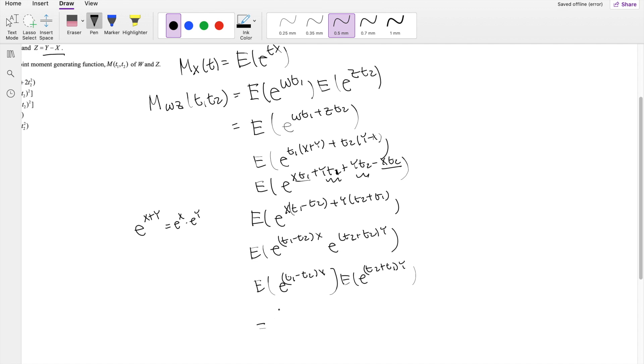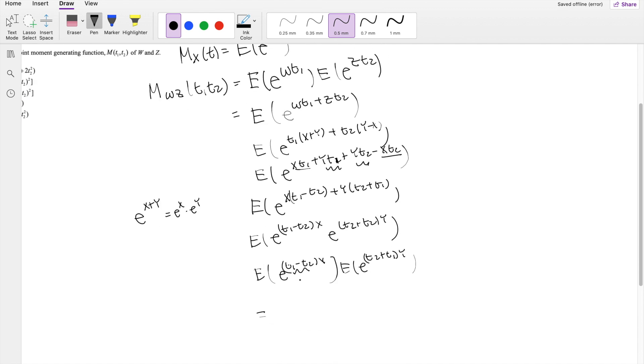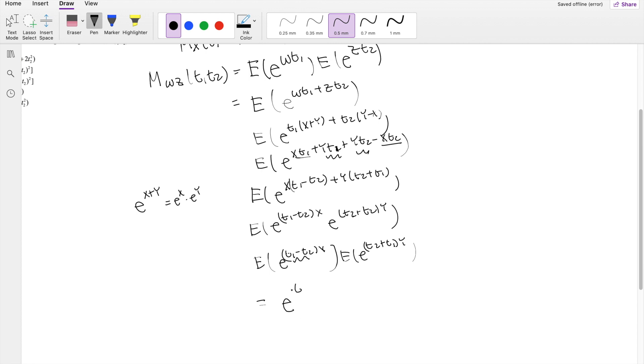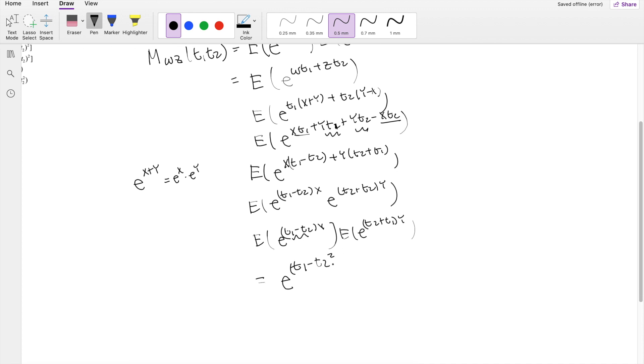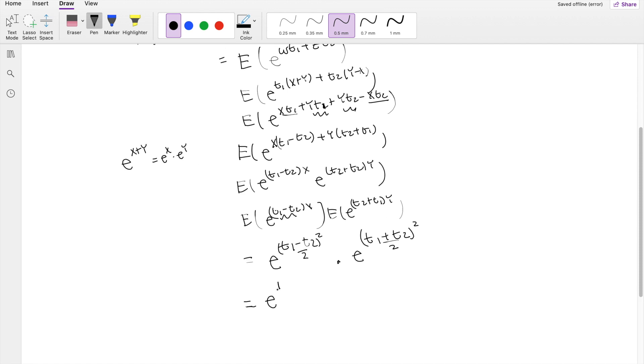you get E to the (T1 minus T2) squared divided by 2 times E to the (T1 plus T2) squared divided by 2.